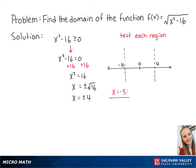First, we'll test when x is less than negative 4 by plugging in negative 5. So we get negative 5 squared minus 16, which equals 25 minus 16, which equals 9, which is greater than 0. This means that the square root will be positive when x is less than negative 4.